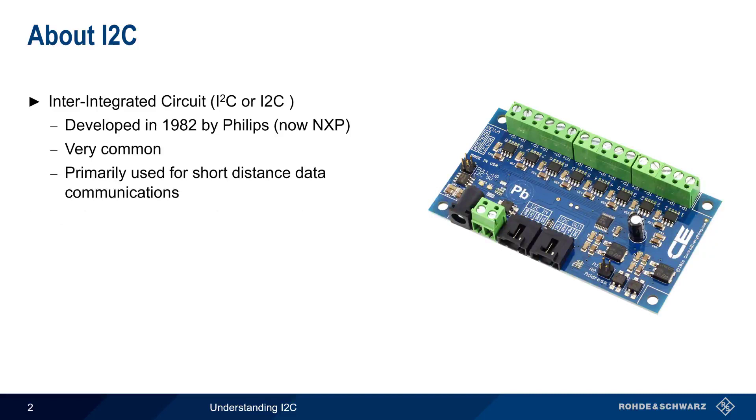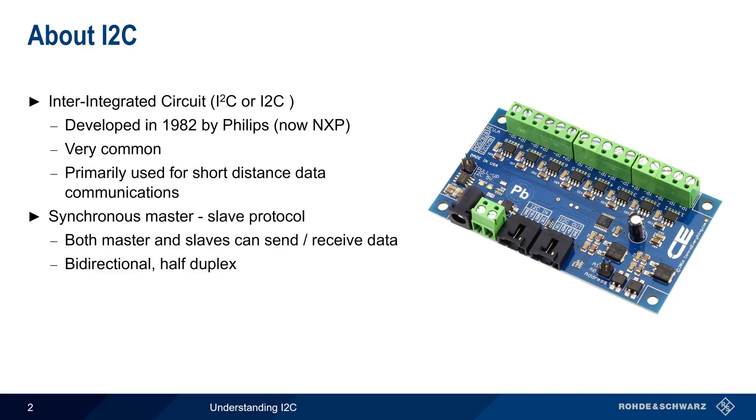I2C is a synchronous master-slave type protocol in which both the master and the slaves can send or receive data. It operates bi-directionally in half-duplex mode and can run at different clock speeds. Only two wires, serial clock and serial data, are used in I2C. In the remainder of this presentation, we'll go step-by-step through the frame structure and operation of I2C.